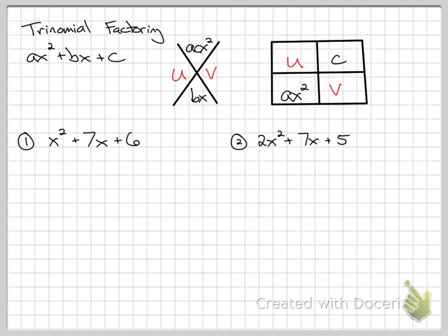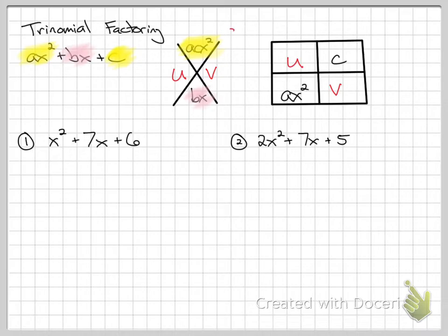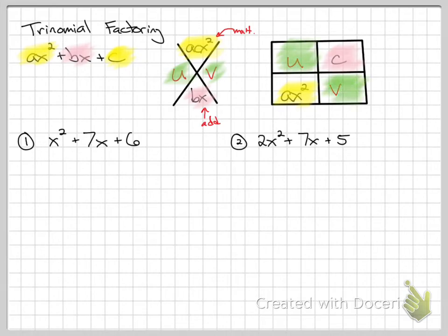Now moving on to three terms — a trinomial. For trinomial factoring with ax² + bx + c, you make a diamond. The top of the diamond is the first term times the last term (ac·x²), and the bottom is just the middle term. You're looking for two numbers that multiply to the top and add to the bottom. Then you draw an area diagram: ax² in the bottom left, c in the top right at a diagonal, and your two found numbers in the other boxes, then factor each row.